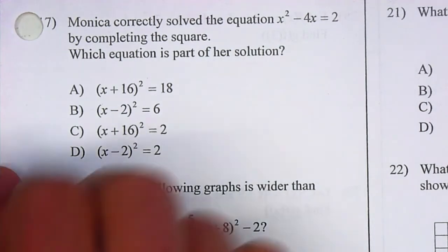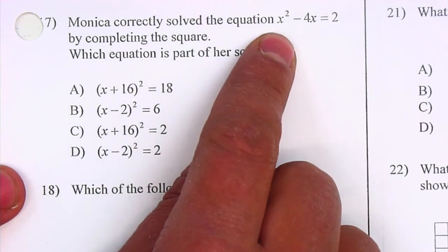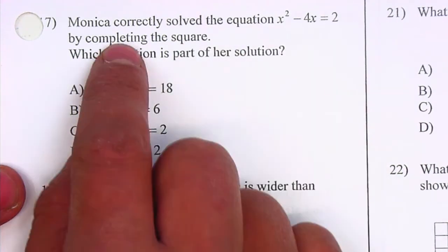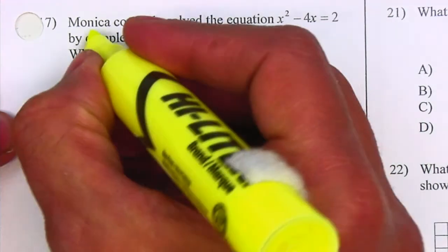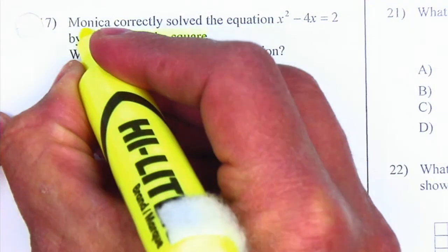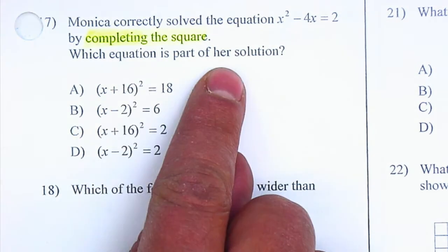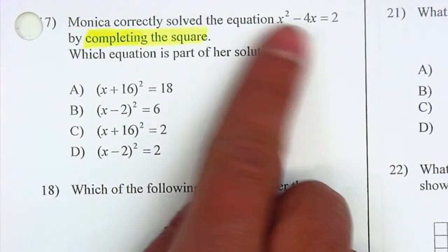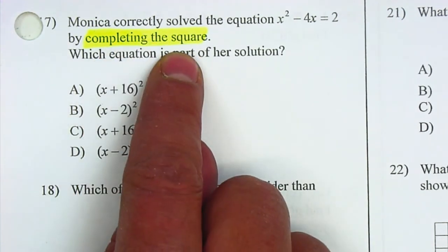On problem number 17, we have Monica correctly solved the equation x squared minus 4x is equal to 2 by completing the square. So we're going to have to complete the square as well, which equation is part of our solution. Now, to complete means that we need to be able to add something in order for it to become a square.